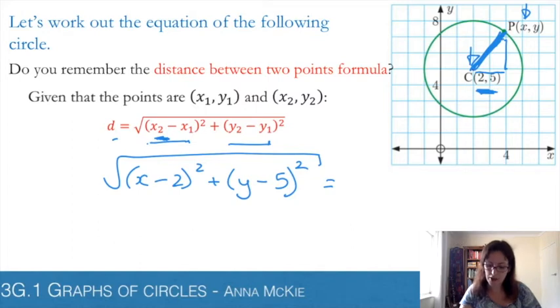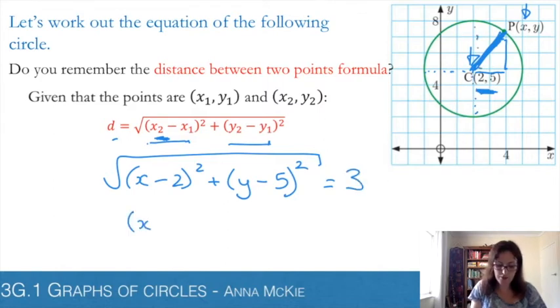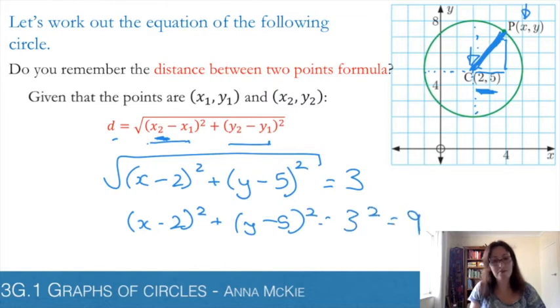You'll be able to see where it goes through the grid squares that you have a radius of 3. And we can rearrange that so we don't have that square root. By squaring both sides, we would end up with 3 squared, or 9. And that's the formula for the equation of a circle.